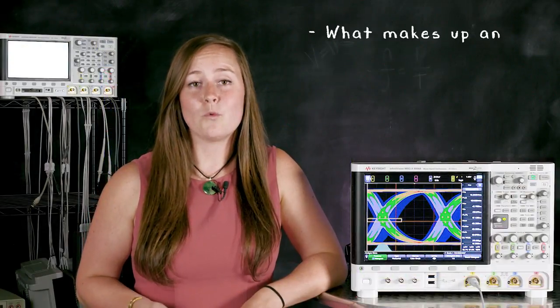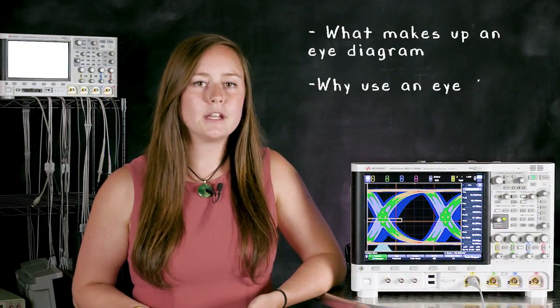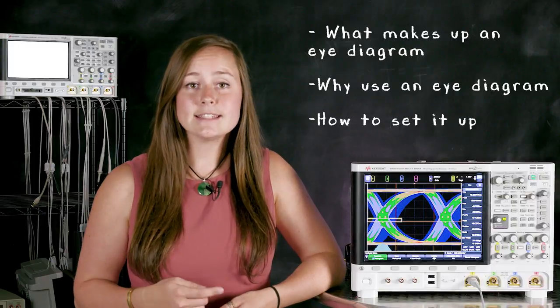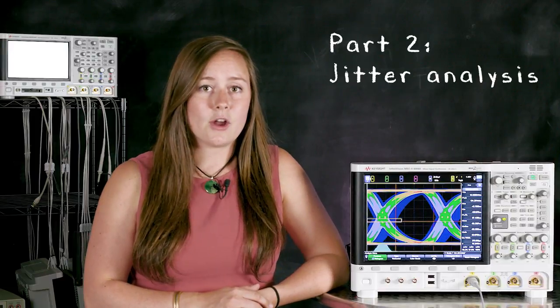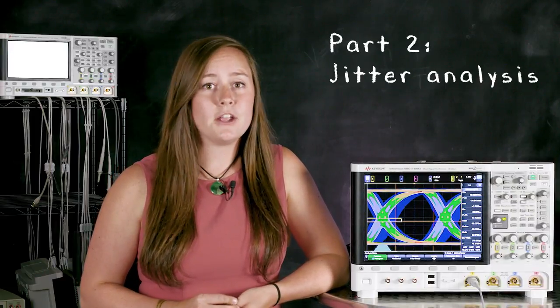So we just learned some of the basics of what makes up an eye diagram, why you want to use one to test your signal, and how to set it up on the scope. In the next InfiniVision episode we'll be doing an even deeper analysis of this eye diagram using the jitter measurements to figure out what might be causing the anomalies that we're seeing in this signal.